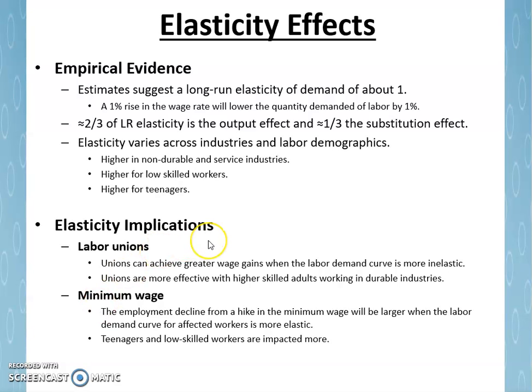Now let's talk about some of the implications of elasticity of labor demand. This has to do with labor unions and the minimum wage. Labor unions are collective bargaining arrangements where workers come together and negotiate as a group rather than as individuals. Labor unions often do achieve higher wages for workers. However, their effectiveness is likely to depend upon the elasticity of labor demand in an industry.